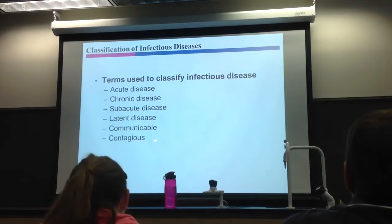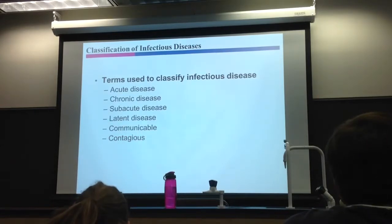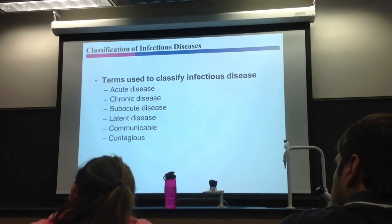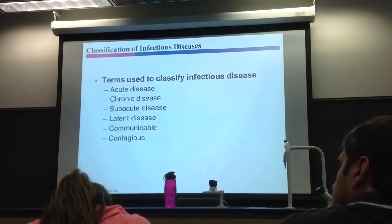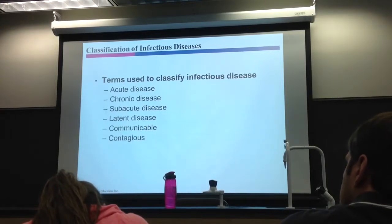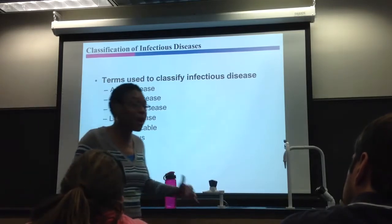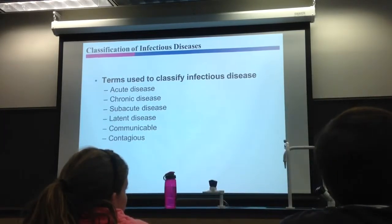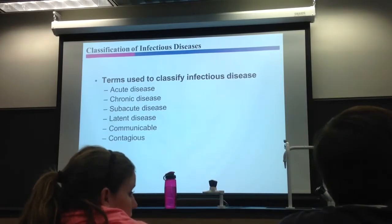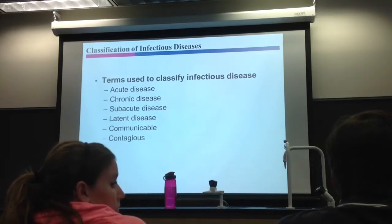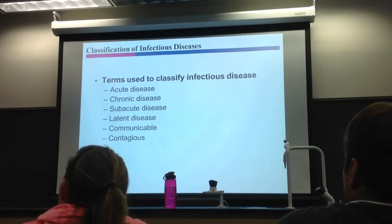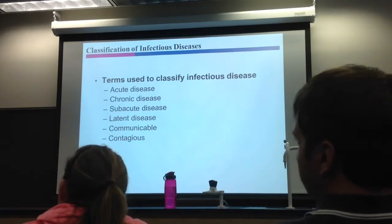Contagious falls under communicable. Contagious means it can spread easily. Chicken pox, for example, is highly contagious — if your brother had it, you got it too. Younger people may never have had it because they received the vaccine. Contagious means it's communicable but easily passed along.